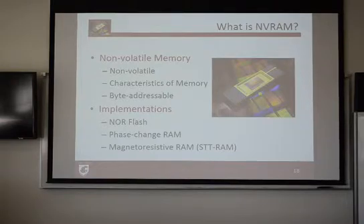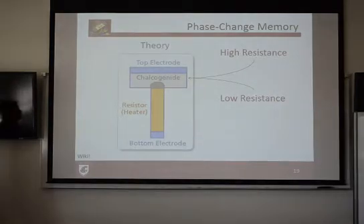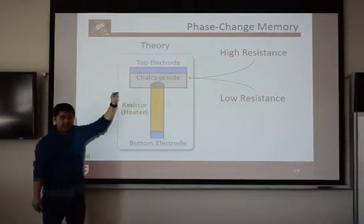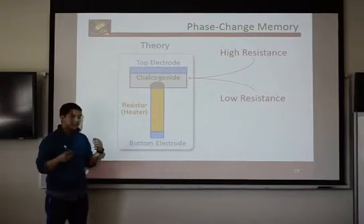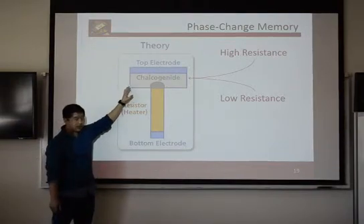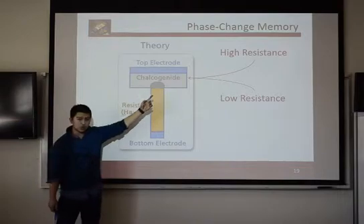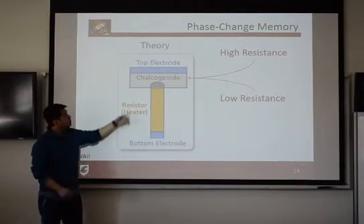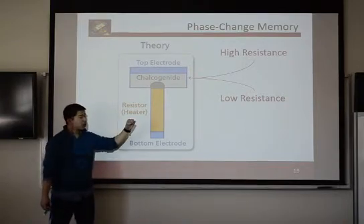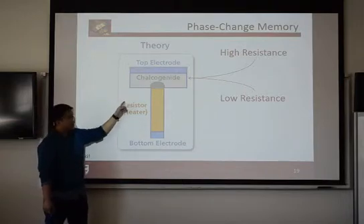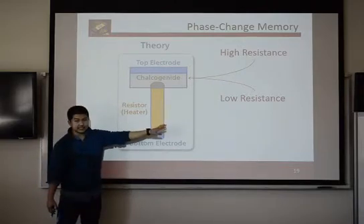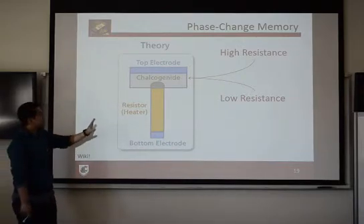So the first NVRAM technology I'm going to be talking about is phase change memory. Practically this is what a cell looks like. This gray box is a crystal. And that's the thing that holds the state of the information. So the two states that can be stored in this crystal is high resistance or low resistance. So you can heat up the crystal past its melting point and cool it and it will be a high resistance crystal. Or you can heat up the glass to past crystallization point but below melting point and it will be in a low resistance state. So that's pretty cool.